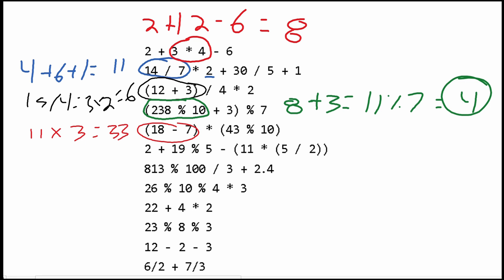Next, we have 2 plus 19 modulus 5. We look at the modulus first: 19 modulus 5 is 4, and we add 2 to get 6. Then we subtract the value in parentheses. That gives us 2, multiplied by 11, giving 22. So we have 6 minus 22, which gives us negative 16. That is the answer for that one.